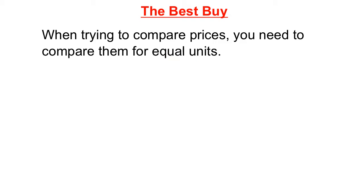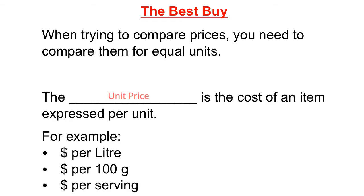For example, if I have a bag of chips that's 200 grams and I'm comparing that to another bag of chips that has 300 grams, it's not a fair comparison because the chip bags are different sizes, so of course their prices aren't going to be the same. To find the best buy, you have to compare equal units. This is where the unit price comes in — the cost of an item expressed per unit, such as dollars per liter, dollars per 100 grams, or dollars per serving.